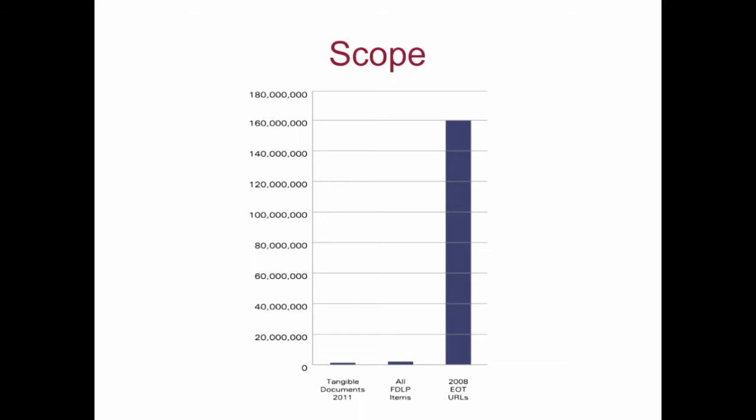This is a graph from the paper I did for the Center for Research Libraries on born-digital federal government information. Although the size of the fugitive problem is difficult to measure, the scale can be illustrated by looking at three different values: on the left, that tiny bit is the 10,000 items distributed by GPO to FDLP libraries in one year; in the middle are the two to three million items estimated to be held in the federal depository library program in total; and the right bar that overwhelms the first two is the 160 million URLs harvested in a single year in the 2008 end-of-term crawl.